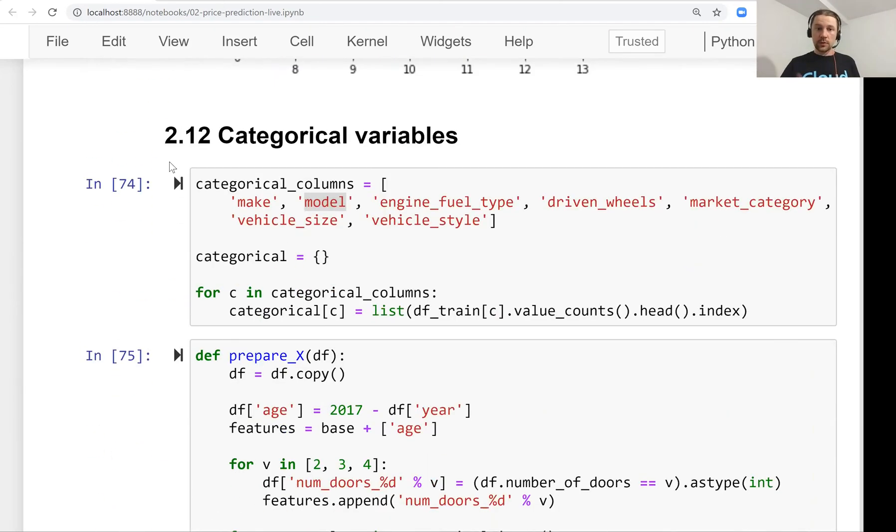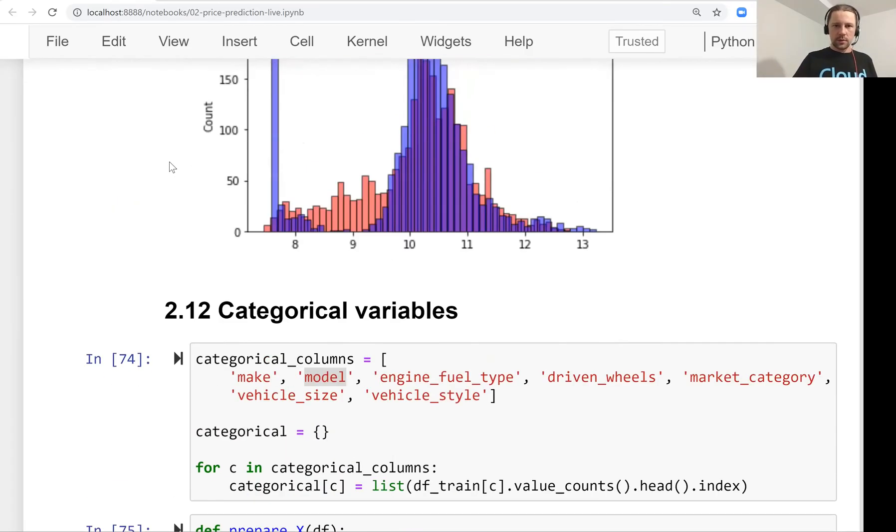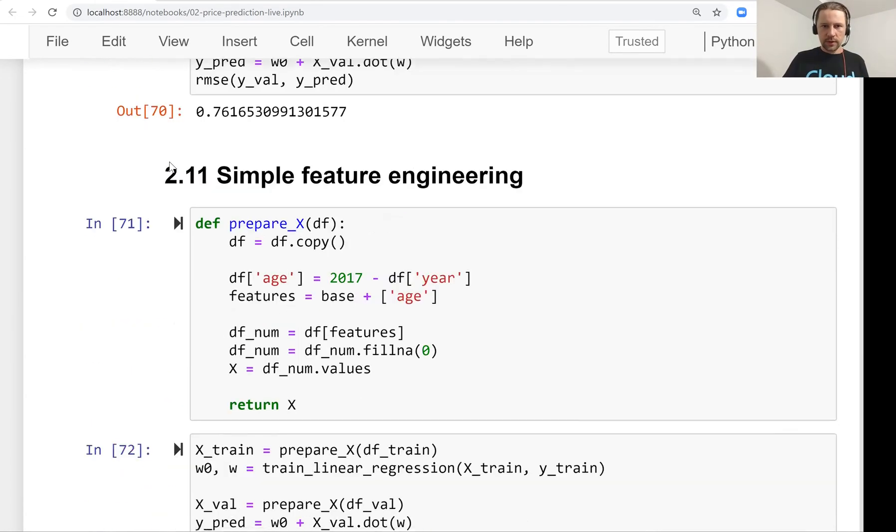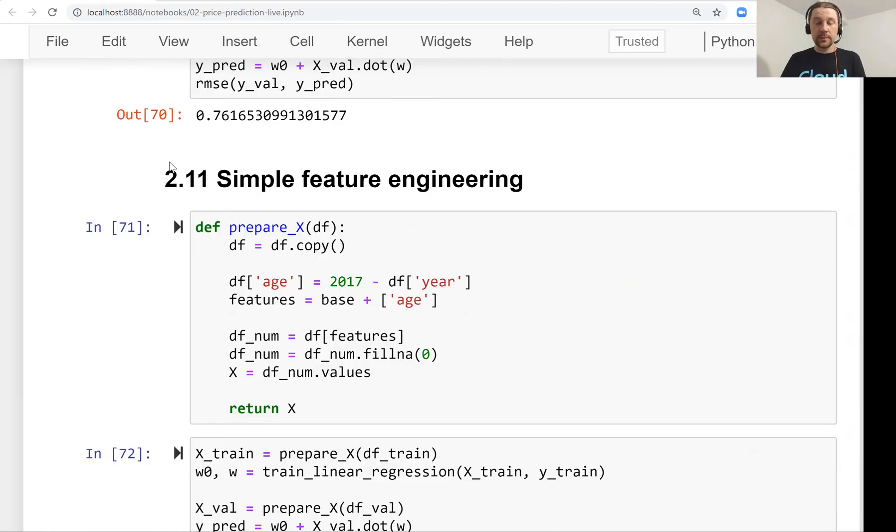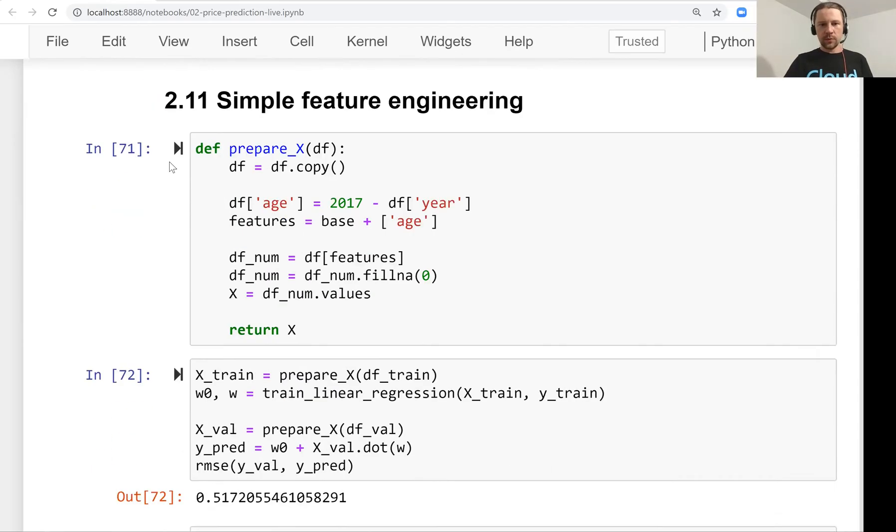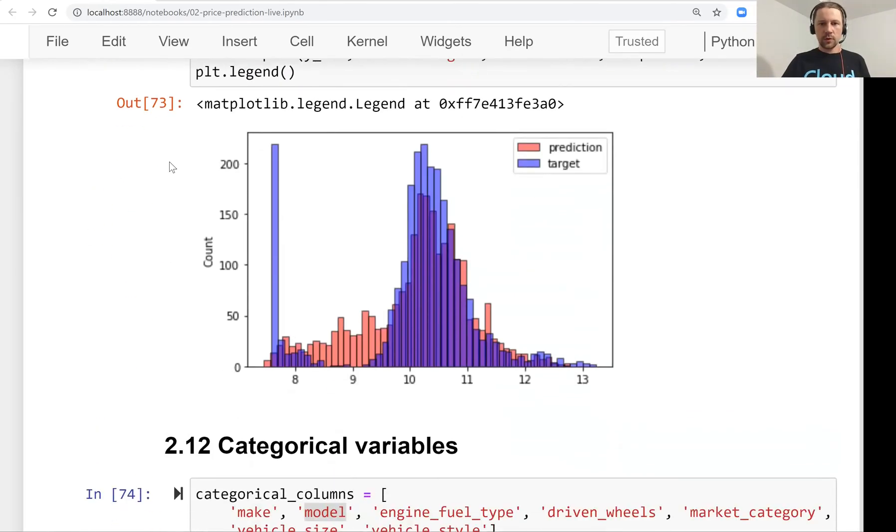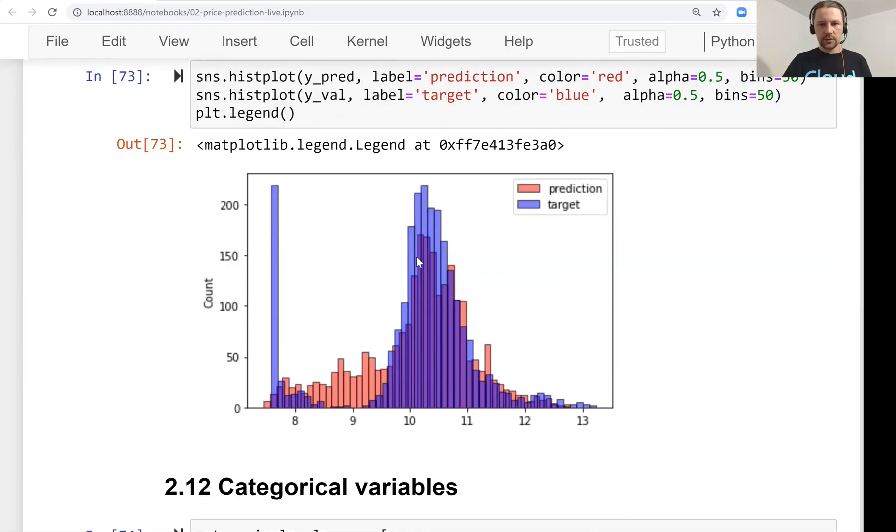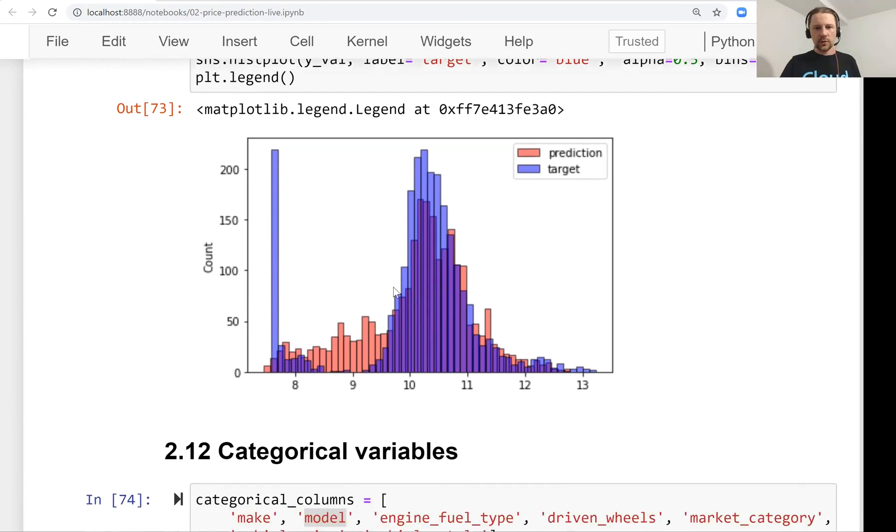After that we did simple feature engineering. Feature engineering is a process of creating new features from existing ones. We created the feature age that improved the performance of our model drastically. As we see here, the distributions now match, the predicted distribution and the actual values. Well, not exactly, but at least they match better than previously.